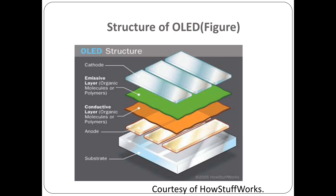Moving to the structure of OLED: this figure shows a structure containing five layers. The top layer is the cathode, the second is the emissive layer, the third is the conductive layer, the fourth is the anode, and the bottom layer is the substrate, which is a supporting base for all the above layers.